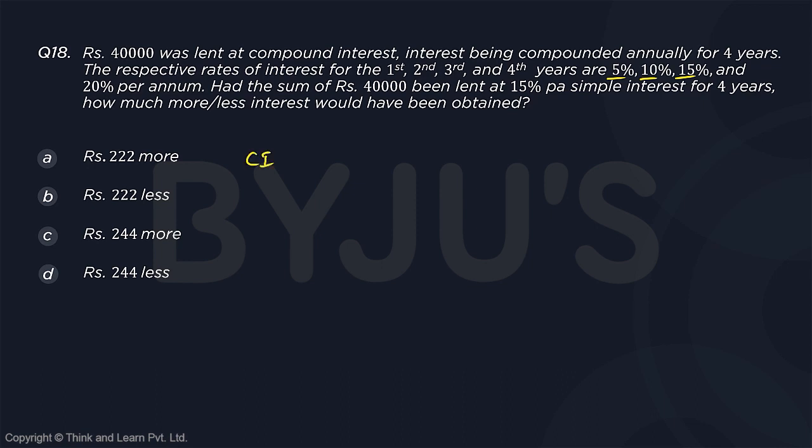Now, under compound interest, the total value will be P into 1 plus R1 by 100 for the first year, 1 plus R2 by 100 for the second year and so on. So the compound interest minus your principal, the compound interest value will be 40,000 into 1.05 into 1.1 into 1.15 into 1.2 minus your 40,000.